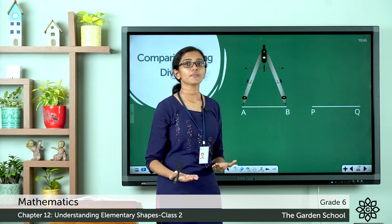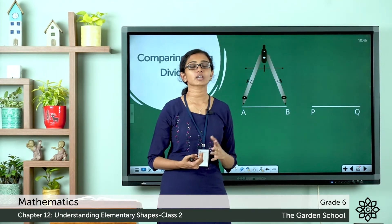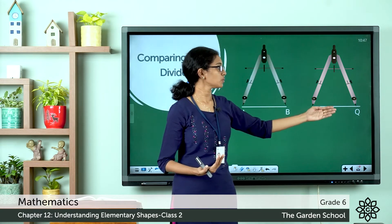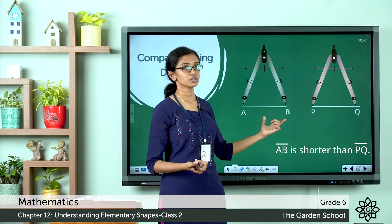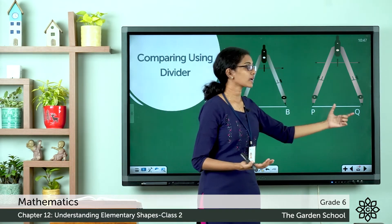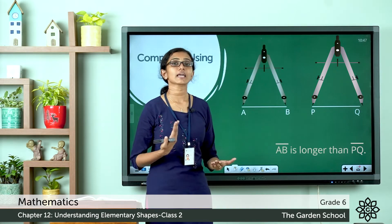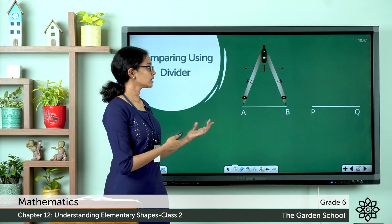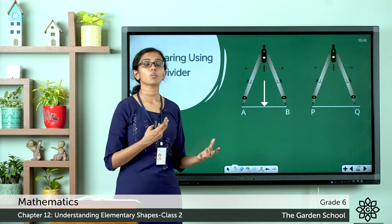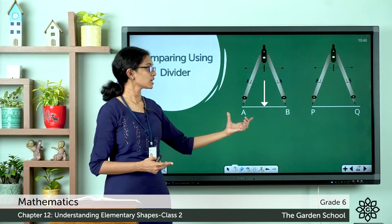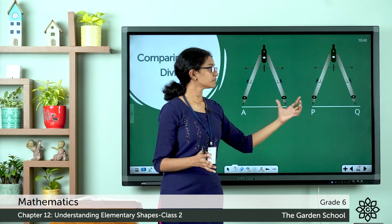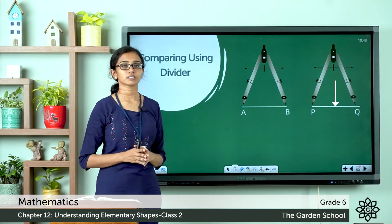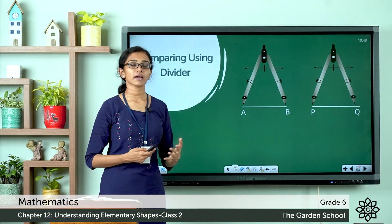See where the other point of the divider falls on line segment PQ. If the other arm coincides with a point before Q, it means AB is shorter. If the other arm exceeds the length of line segment PQ, it means AB is longer than PQ. To summarize: place the divider over one line segment to take its measure, then without disturbing the opening, place it over the other line segment to compare. This is another method of comparing line segments.